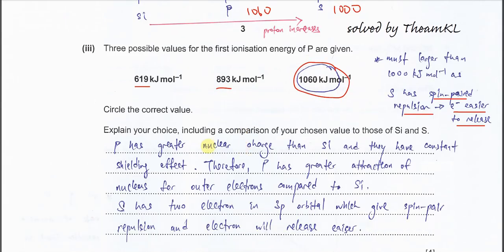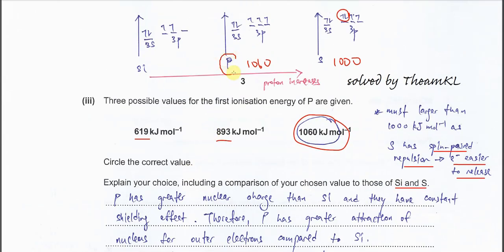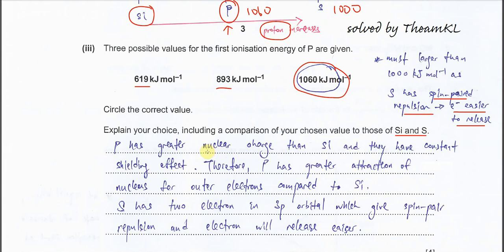Explain your choice, including comparison to silicon and sulfur. First, compare phosphorus and silicon. Phosphorus is group 15, silicon is group 14. Phosphorus has more protons, means greater nuclear charge, with constant shielding. When proton number is higher with constant shielding effect, nuclear attraction is greater. You need to start from nuclear charge. Because phosphorus has greater nuclear charge than silicon with constant shielding effect, phosphorus has greater attraction of nucleus for the outer electrons compared to silicon.